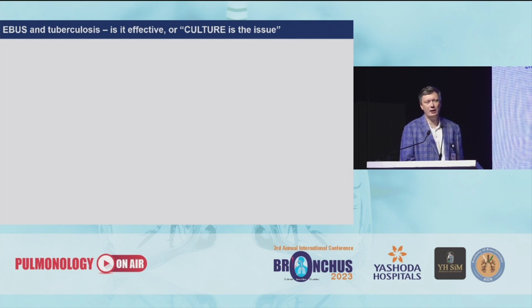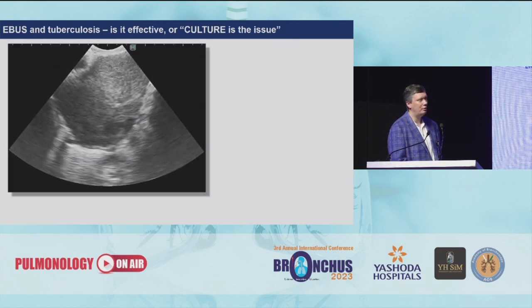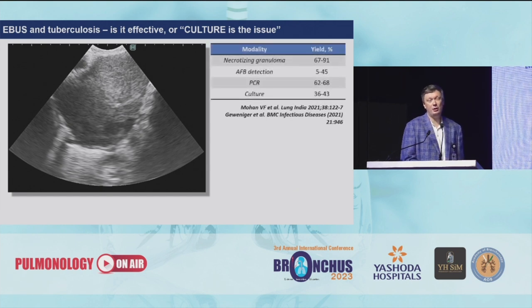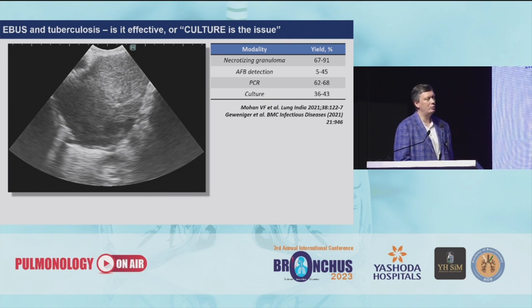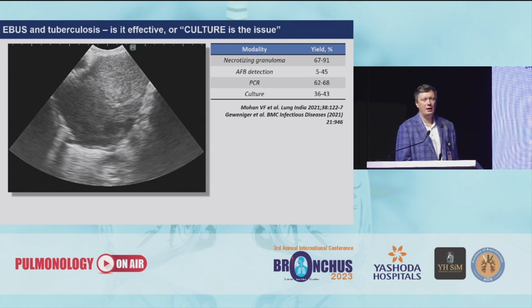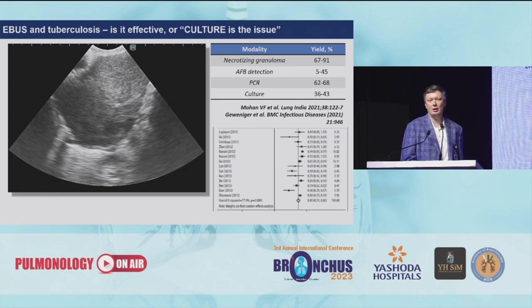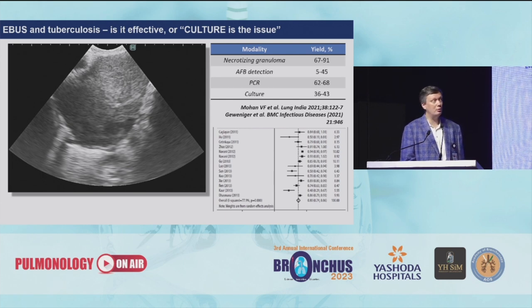The most challenging problem with diagnosing mediastinal TB is culture. Looking at the literature — and it is really good that most of our Indian colleagues are actively publishing, because tuberculosis is active mostly in Southeast Asia and Russia, not in Western Europe — you can see that the efficacy of cytopathology is much higher than culture and PCR in confirmed TB. Even at the meta-analysis level, it is not as high as for malignancy or sarcoidosis. For diagnosing an infection, we need culture and PCR, and these results are not so good.